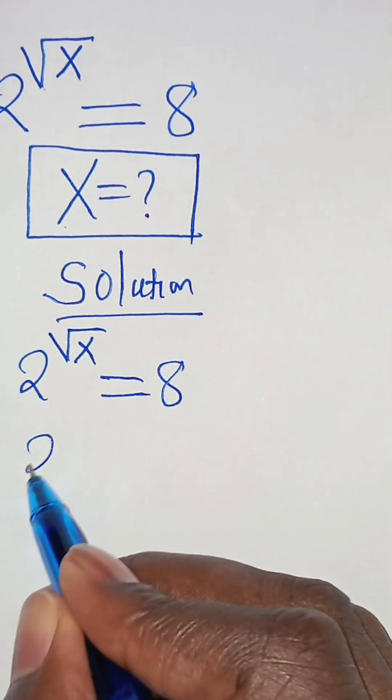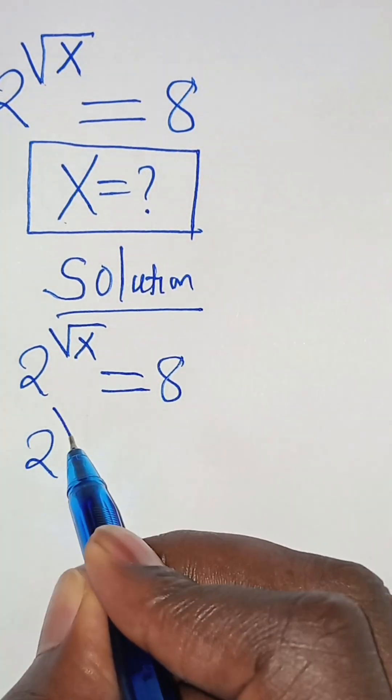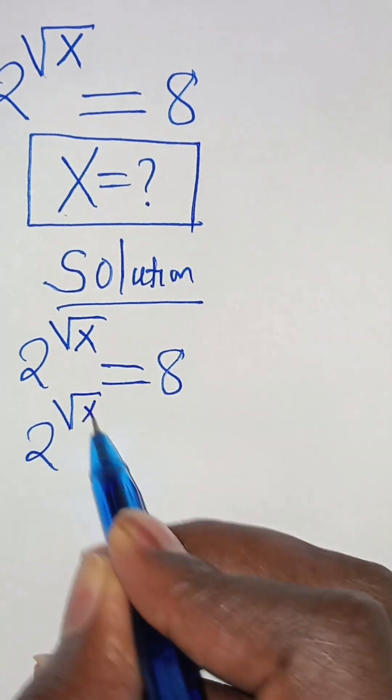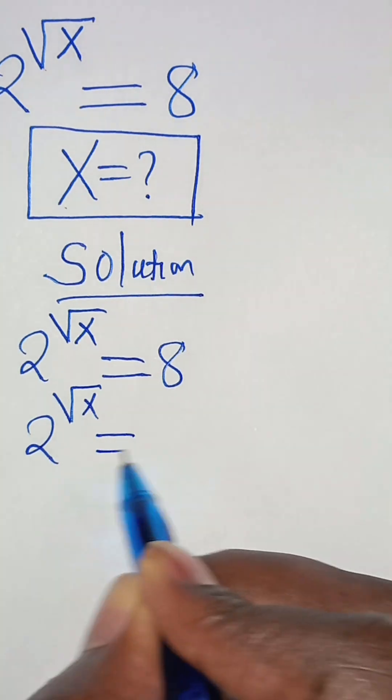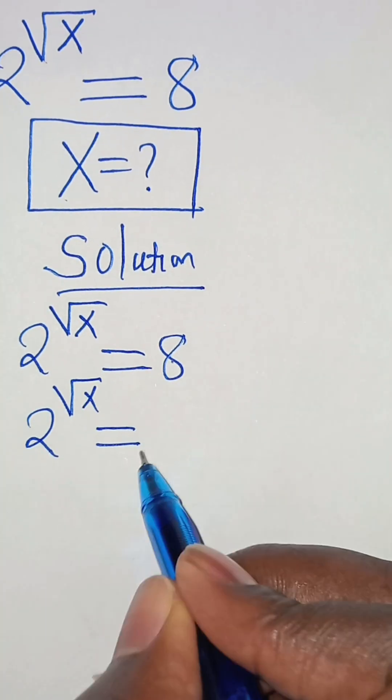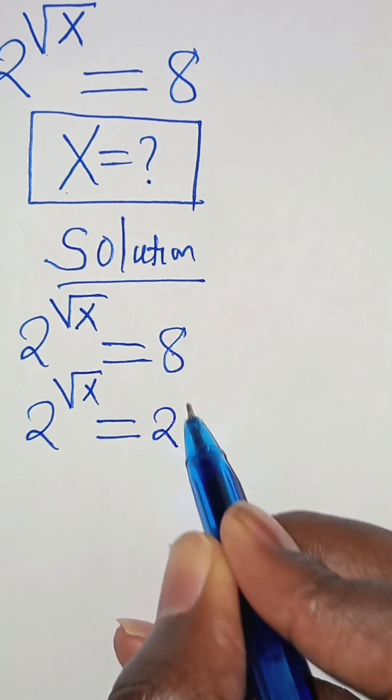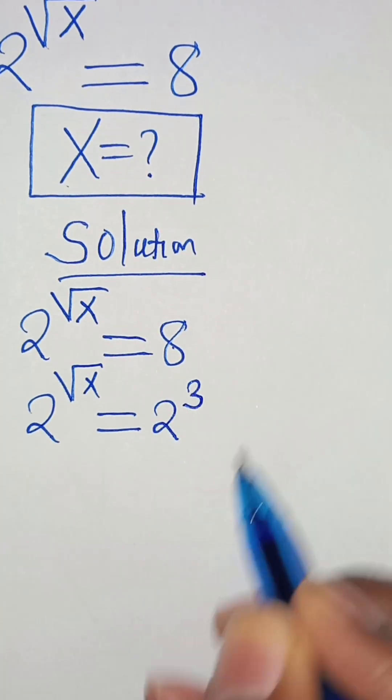So, this is 2 to the power of square root of x, this is equal to 8, which is 2 to the power of 3.